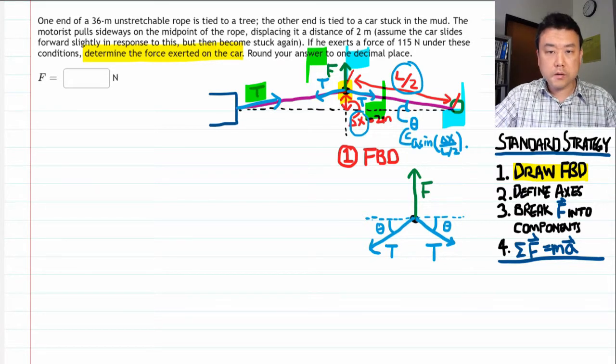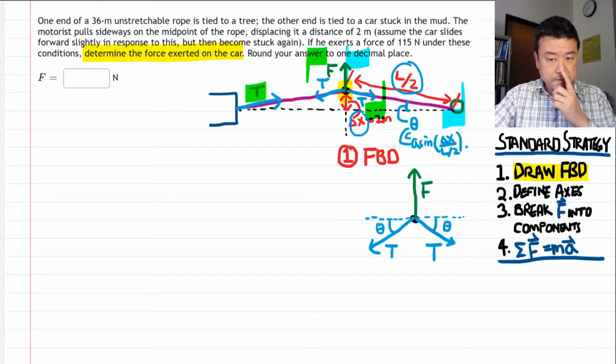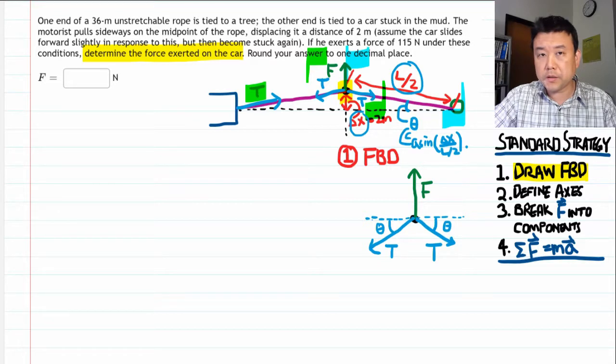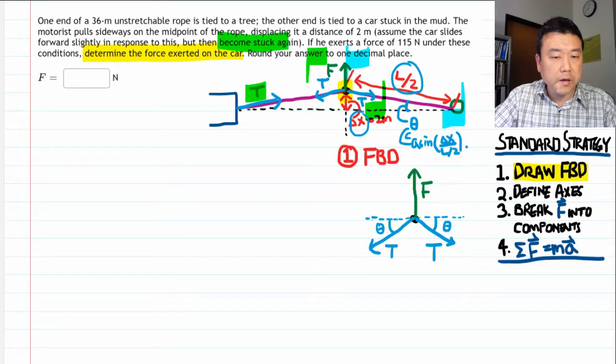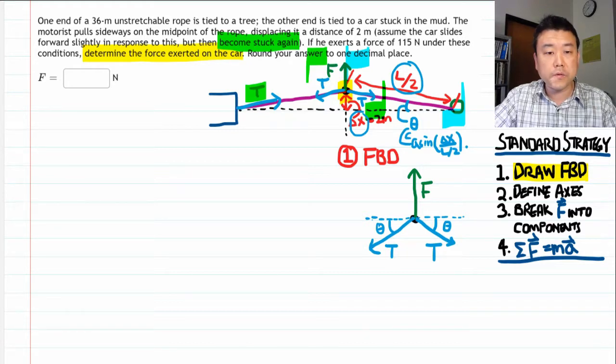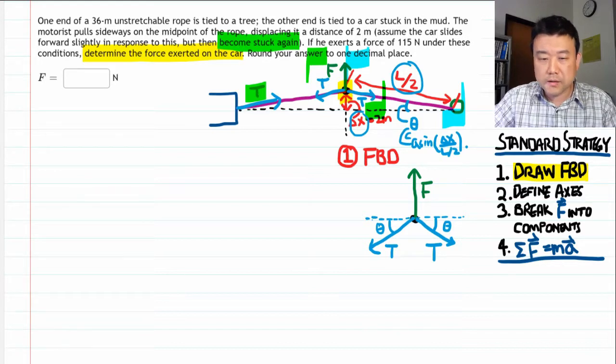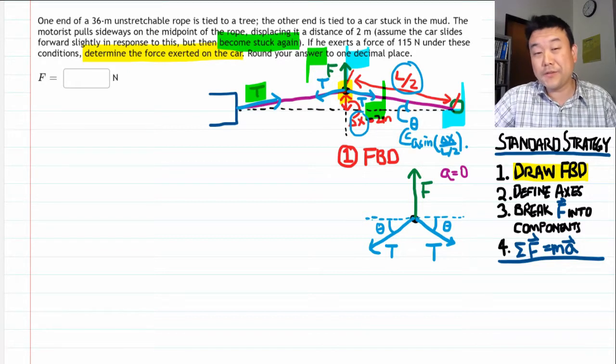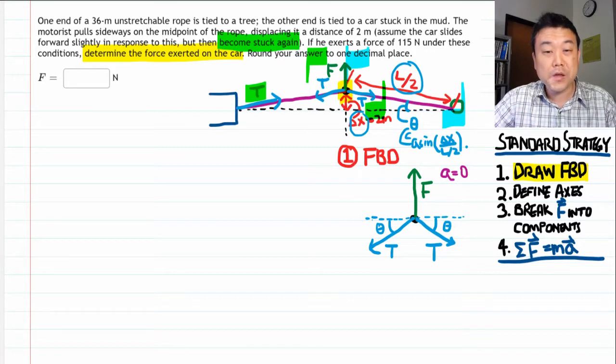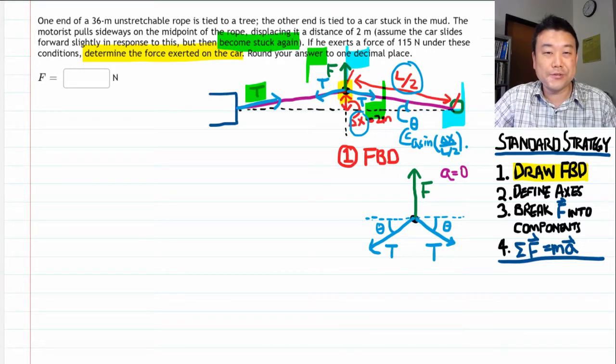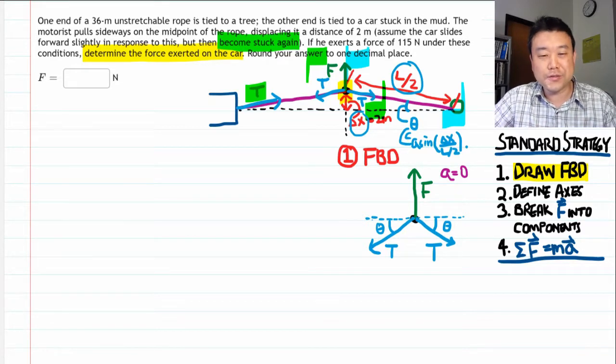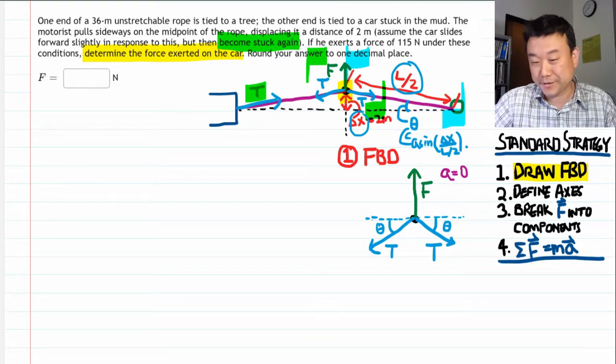All right, good. The next step is to define the coordinate axis. And this is where I said we normally pick it along the direction of acceleration. And here it says becomes stuck again, which means as the driver is applying a force, nothing is moving. So I think the acceleration is zero. So what do you do in those cases? So it's actually even better. When acceleration is zero, you have complete freedom to choose whatever coordinate axis you want. Normally, you should use this freedom to minimize the number of forces that you have to decompose into components.